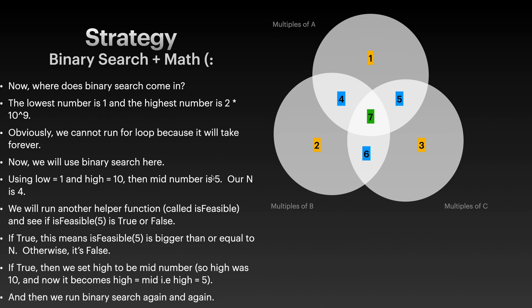We plug the middle number — say 5 — into is_feasible and get either true or false. If the count of numbers divisible by a, b, or c up to mid is greater than or equal to n, is_feasible returns true, and we set high equal to mid. So if high was 10 and mid is 5, high becomes 5, and we ignore 6 through 10. Otherwise we set low equal to mid plus 1.